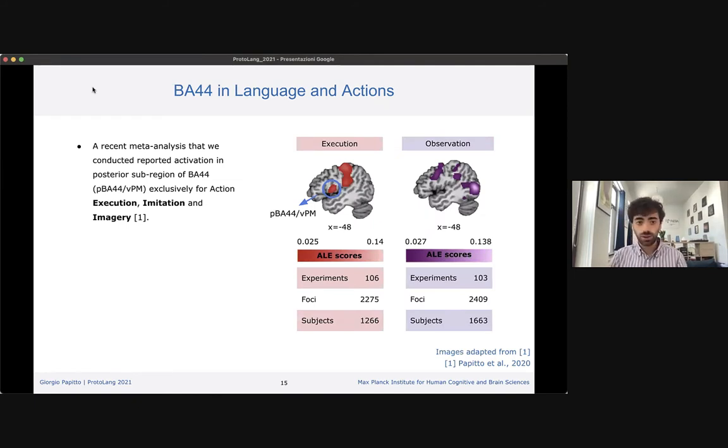I can show you some of the work we did on this. We wanted to check that BA44 is actually involved in the action domain. Our first task was to run a comprehensive coordinate-based meta-analysis on action processing. We collected data from more than 400 PET and fMRI experiments to investigate whether we could find common activation of BA44 for different action tasks. We could find BA44 recruitment exclusively in action execution, imitation, and imagery. Here I give you an example of the action execution cluster in the red column. In other action tasks like action observation, we could not find any convergence at all in the left inferior frontal gyrus.